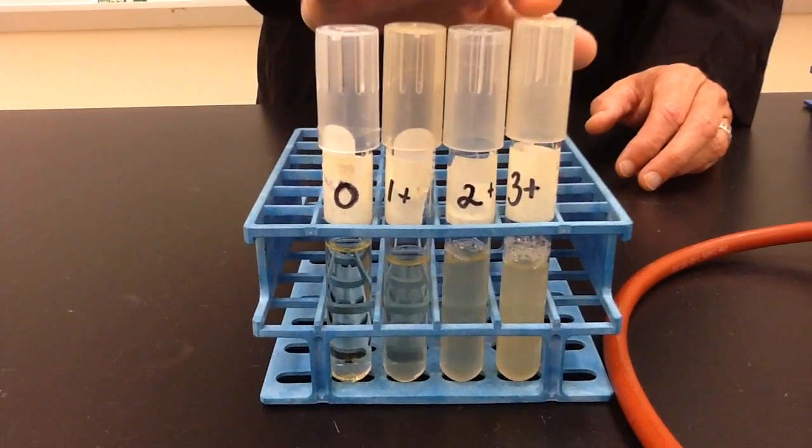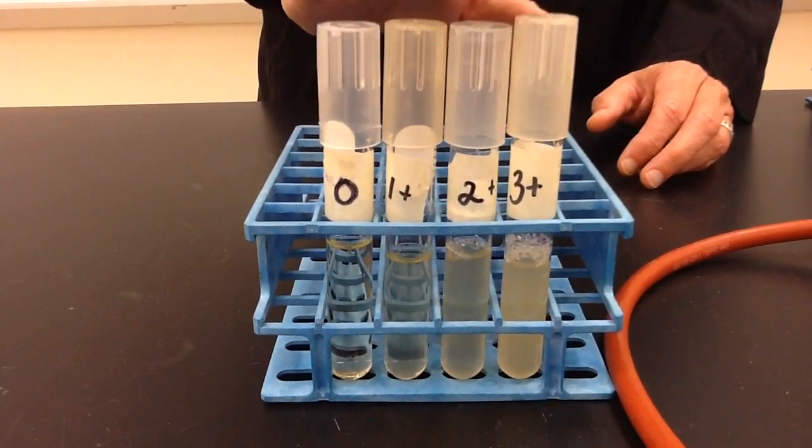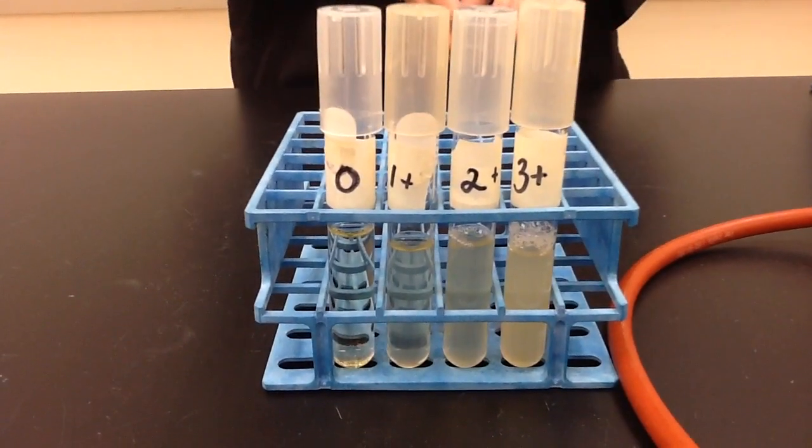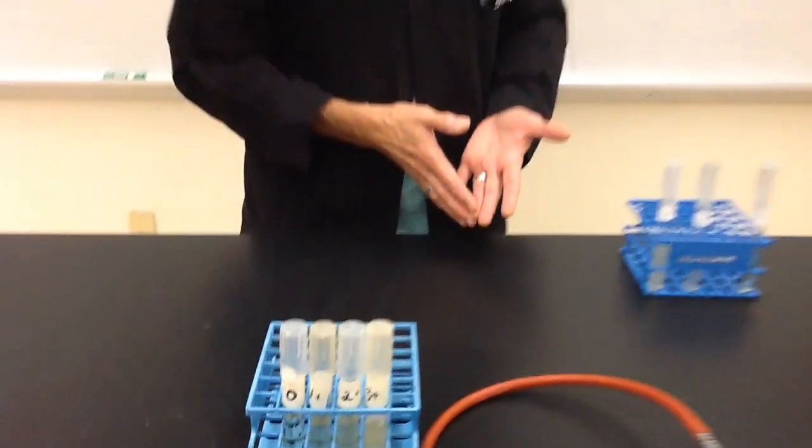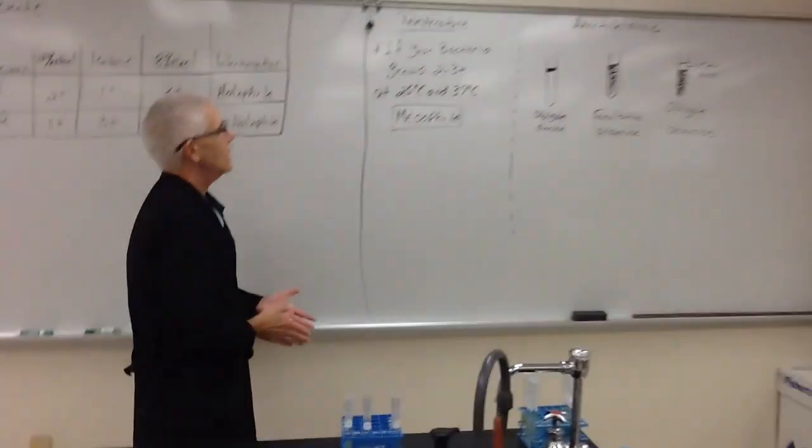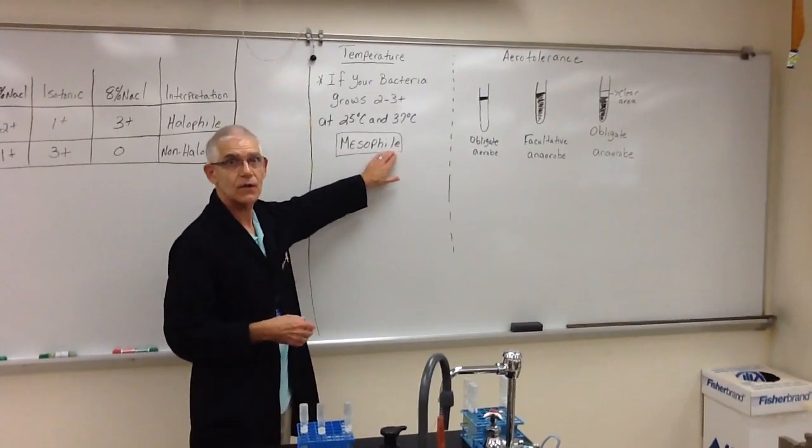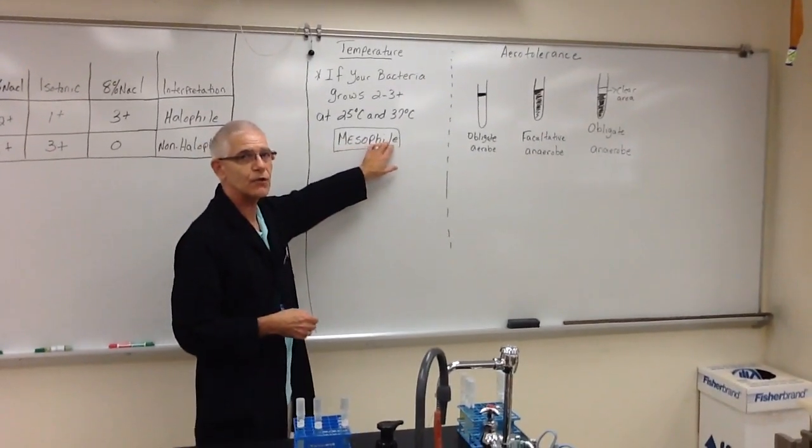So, you're going to get your temperature tubes, you're going to mix them up, and then how are you going to interpret those results? Basically, our bacteria are considered mesophiles. They grow very well at 37 degrees.